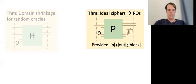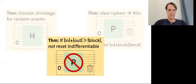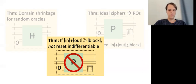You may look at this restriction on the input and output size and it may seem unexpected, but we show that this is actually the right answer and it's inherent. For this particular construction, we show that if you try to have the sum of input and output size exceed the block size of the permutation, then there's actually an explicit attack breaking the reset indifferentiability of the construction. Note that this is in contrast to the plain indifferentiability setting, where the padding and truncating just need to each be independently larger than the security parameter.